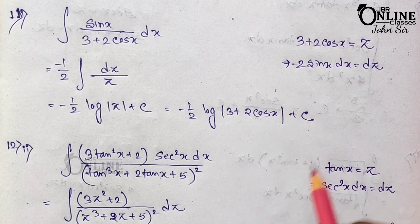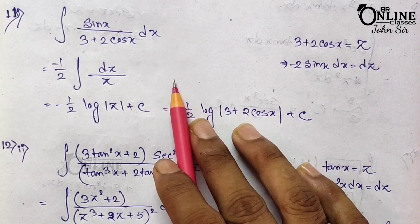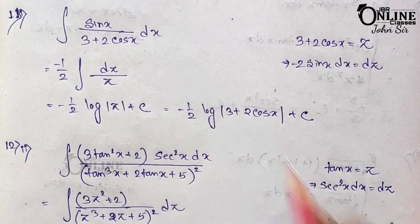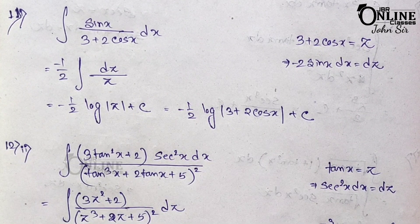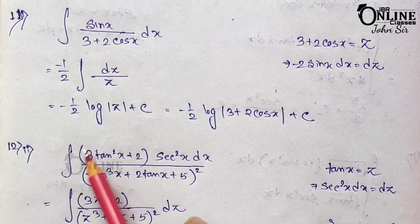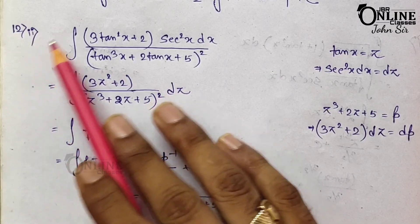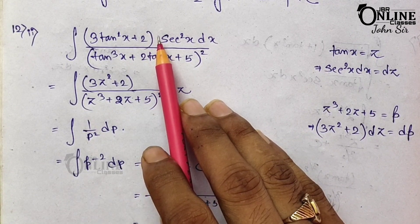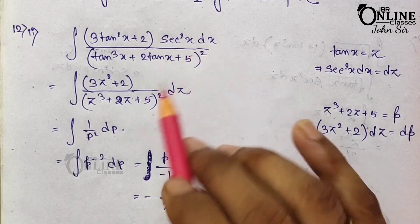So the answer to 11.1 is −(1/2)log(3 + 2cos x) + C. Problem 11.2 is the same type as 11.1, so I hope you can solve it. If you like my video, please share it with your friends and subscribe to my channel if you are a new viewer. Problem 12.1: let sin x = 1 + cos x — it is straightforward and covered.